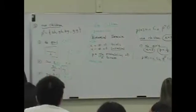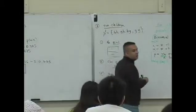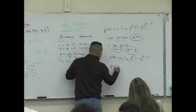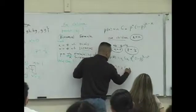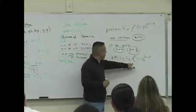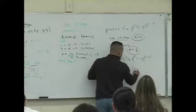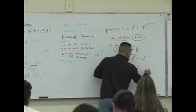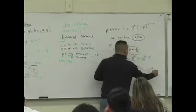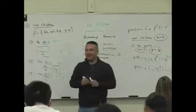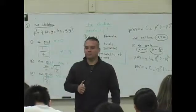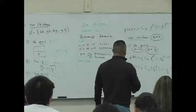P of 0 is going to be 2C0 times 1/2 to the 0 power times (1 minus 1/2) to the... what's 2 minus 0? Be careful, 2 minus 0 is not 0, it's 2.